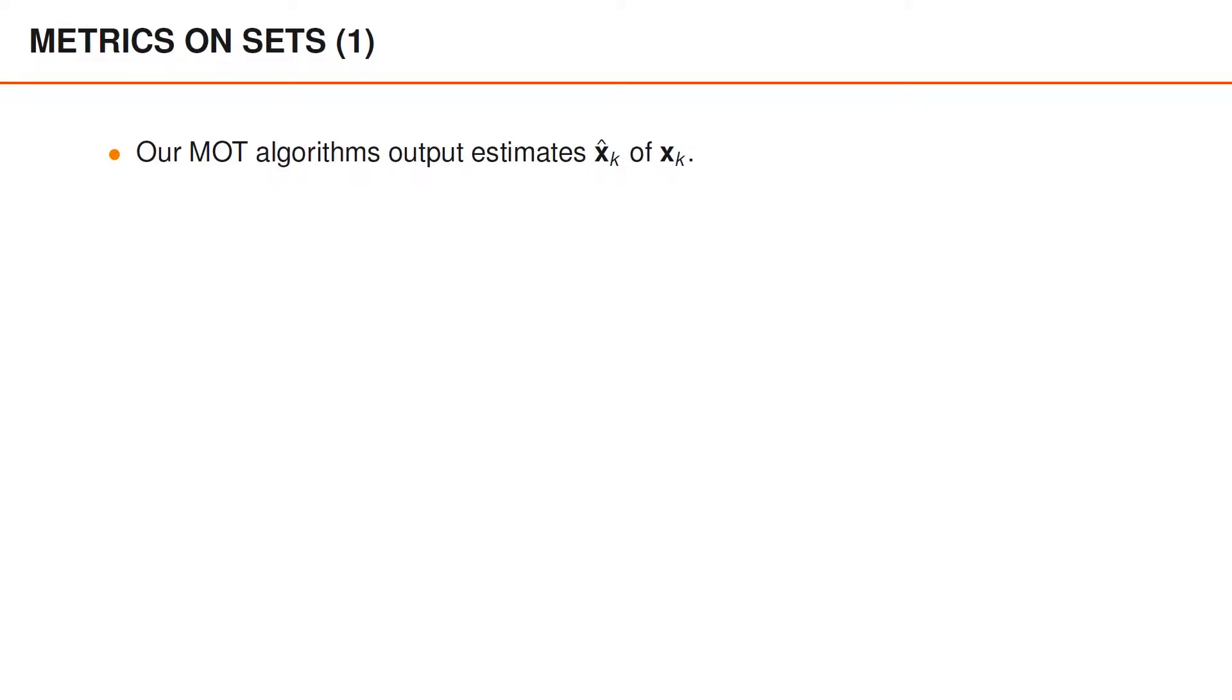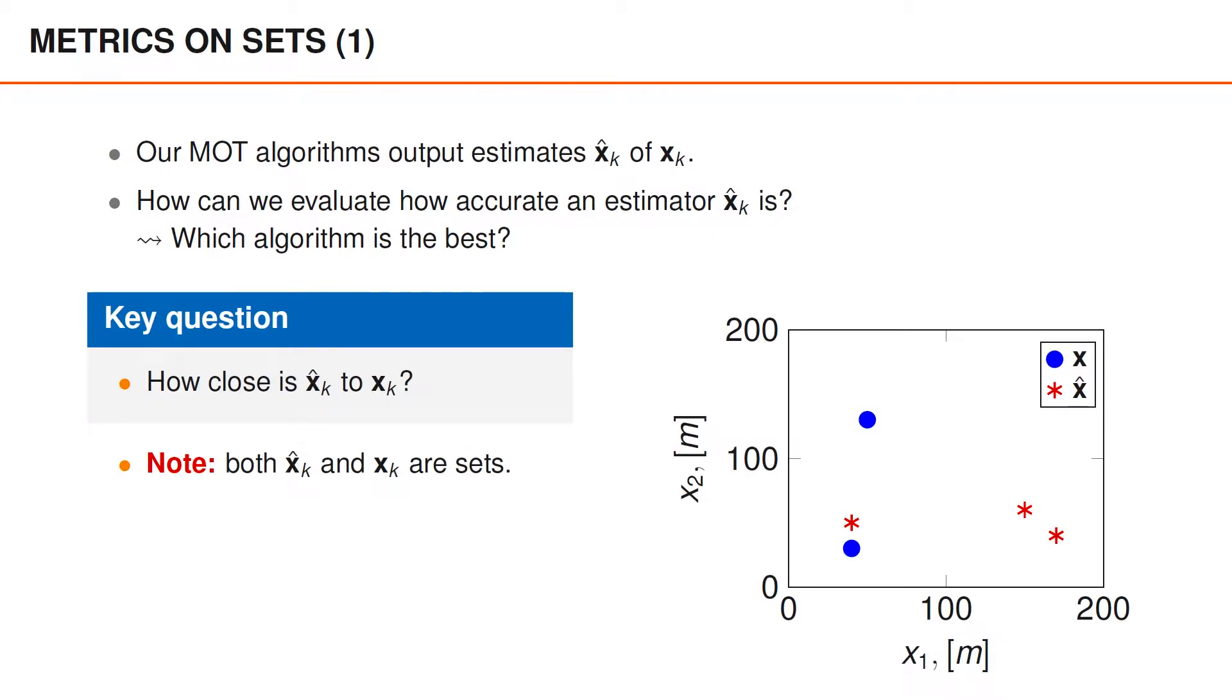At the end of every recursion, our multi-object tracking algorithms normally output an estimate x hat k of the true set of objects x k. Our objective is to figure out how to evaluate how accurate the estimate x hat k is. One reason that we care about this is to figure out which algorithm produces the best estimates. Another way to express this is that we want to know how close x hat k is to x k. It is important to note that both x hat k and x k are sets.